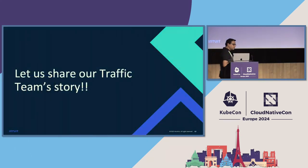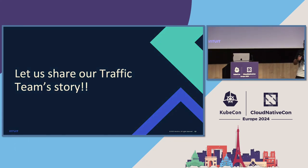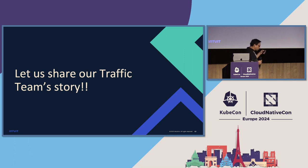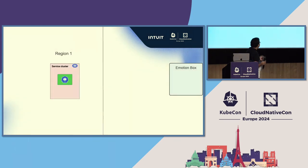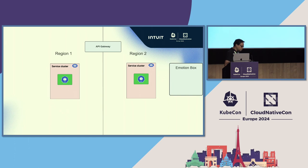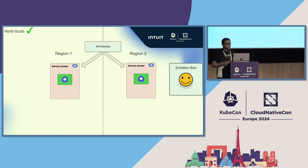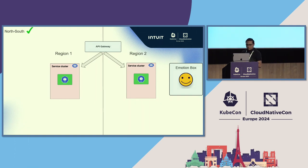With basic understanding of gateway, service mesh, rate limiting, and traffic dialing, let's understand the complexity at scale of 300 plus clusters. Typically at Intuit, when we start a service we begin with one region, then expand to a second region. All services are behind the API Gateway — they take north-south traffic from it. Any traffic coming from the internet goes through the API Gateway and we call it north-south.